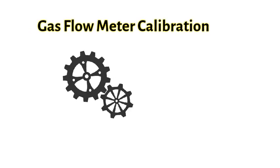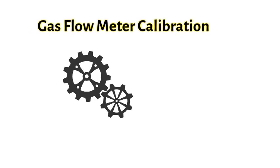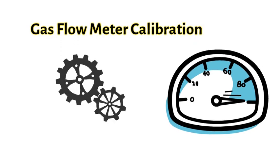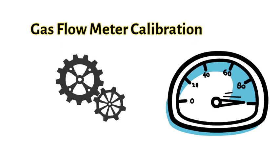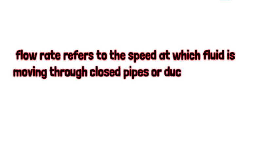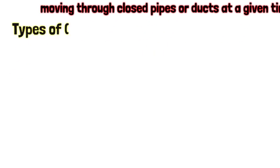Gas flow meter calibration. A gas flow meter is used to measure the volumetric or mass flow rate of various process gases in industrial plants and machinery. The flow rate refers to the speed at which fluid is moving through closed pipes or ducts at a given time.